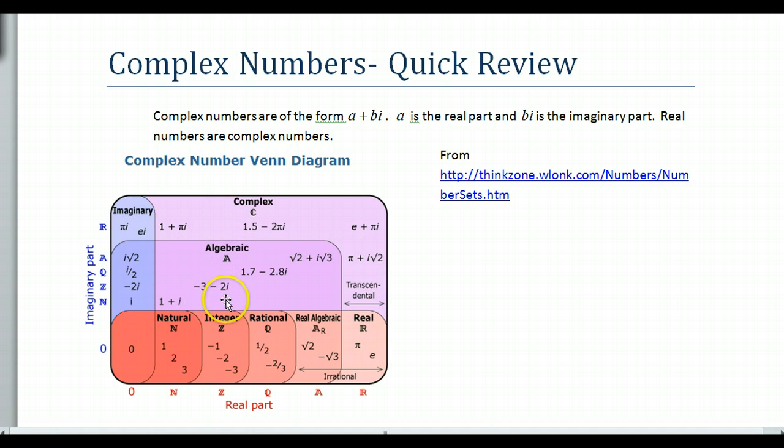And then these are algebraic ones, negative 3 minus 2i, and so on. Okay, so these are the real numbers. They are part of the set of the complex numbers, where B is equal to zero. You should know this setup, and have seen this before.